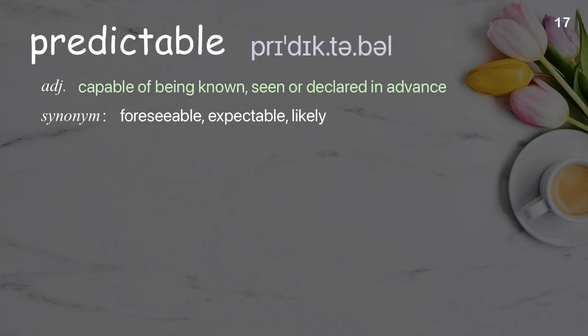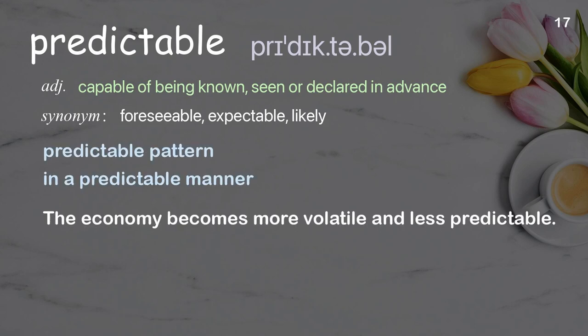Predictable: Capable of being known, seen, or declared in advance. Examples: Predictable pattern, in a predictable manner. The economy becomes more volatile and less predictable.